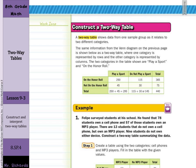The two categories in the table shown are play a sport. So we have play a sport or do not play a sport. And on the honor roll. We have on the honor roll and not on the honor roll. And you can see as the numbers are filled in how these break down.